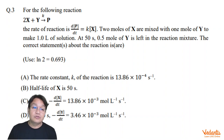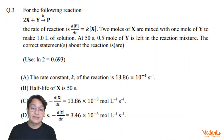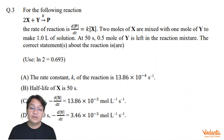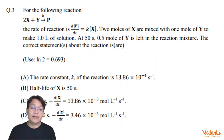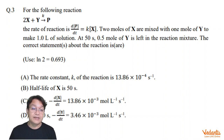In this question, 2X + Y is changing into P with first order kinetics. The rate of formation of P with t is given as kX. Initially, 2 moles of X and 1 mole of Y were taken. At 50 seconds, Y decreased to 0.5 moles, meaning 0.5 mole has reacted. We have to find the correct statements regarding the rate constant, the half-life, and the rates at 150 seconds.